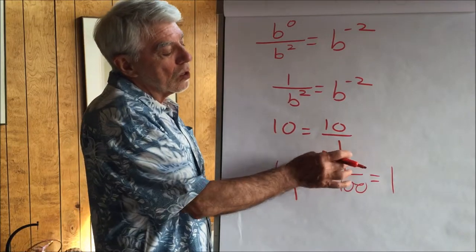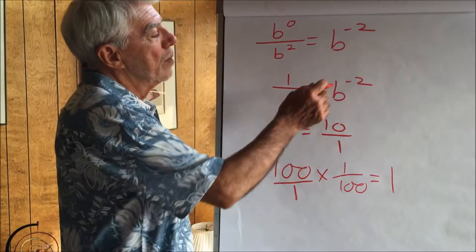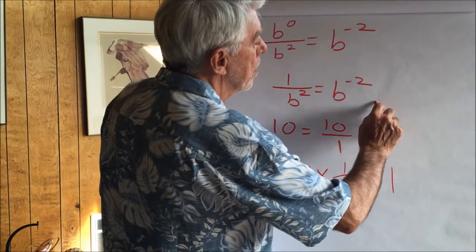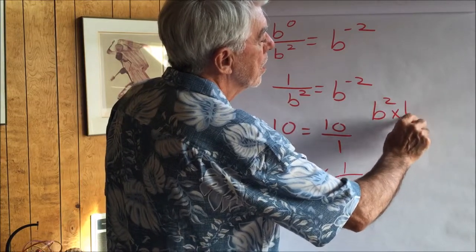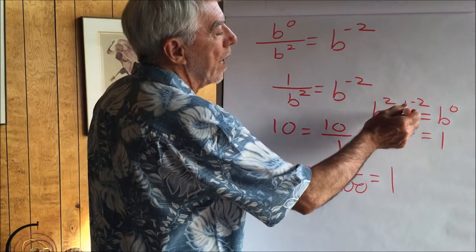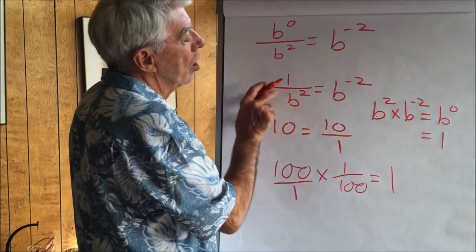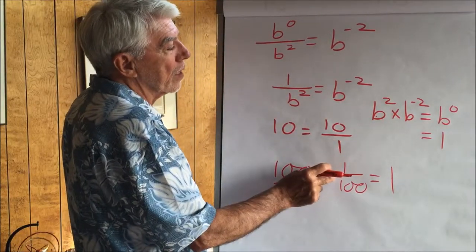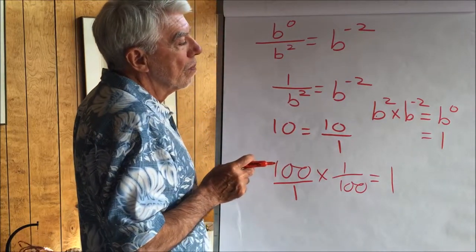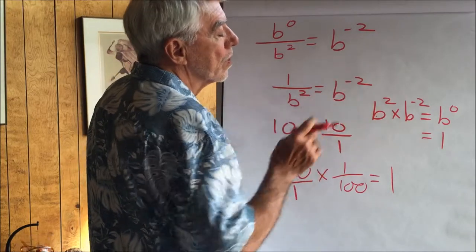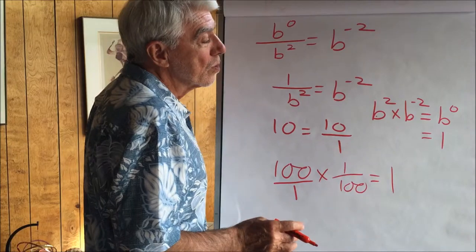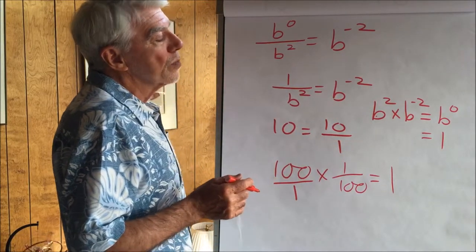If we remember that 100 can be written as 100 over 1, then we can say the reciprocal is merely the number inverted — the one goes on top, the 100 goes on the bottom. B squared times b to the minus two equals b to the zero, which equals one. So b to the minus two is the reciprocal of b squared. A base with a negative exponent is the reciprocal of the number with a positive exponent, because adding the negative and positive exponents gives zero, which equals one.